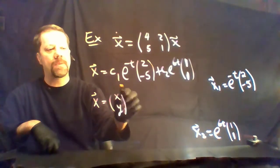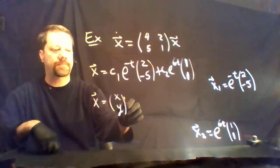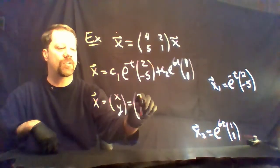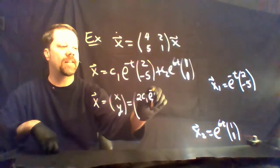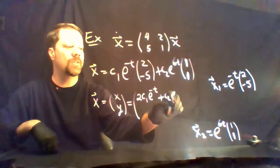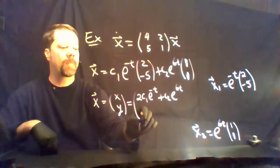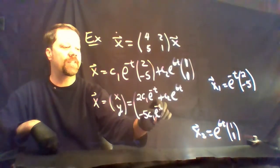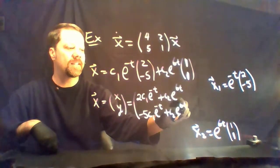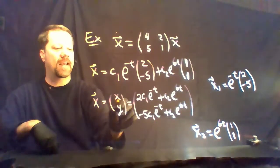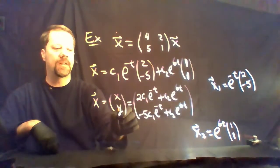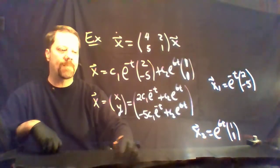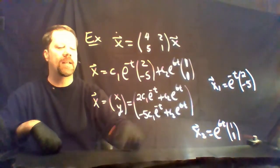You might also be wondering what these solutions look like. To figure that out, you need to rewrite this as (2c1·e to the negative t plus c2·e to the 6t, negative 5c1·e to the negative t plus c2·e to the 6t). So the x-coordinate equals the first function and the y-coordinate equals the second. What the solution looks like will depend upon the values of c1 and c2.